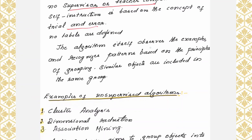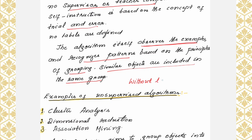The algorithm itself observes the examples and recognizes patterns based on the principles of grouping. Similar objects are included in the same group. Since you are giving the dataset without any labels, the algorithm itself is going to observe those data points, recognize the patterns, and try to group the objects into different groups.